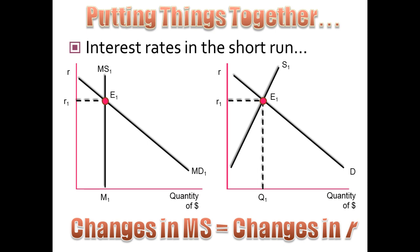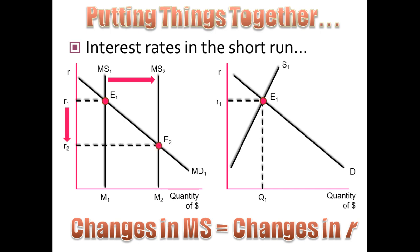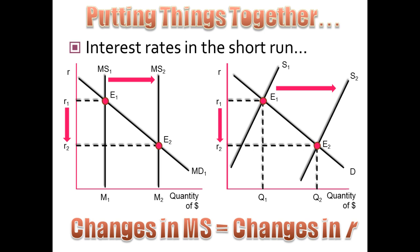These two markets — the money market and the loanable funds market — work together. Changes in money supply affect the interest rate in both markets. In the short run, if we increase the money supply, we see a reduction in the interest rate from R1 down to R2. The increased money supply, because of the money multiplier, creates more M1, meaning more money is in the banks and being saved. So the supply of loanable funds also shifts to the right, moving the interest rate from R1 down to R2 with more loanable funds being lent out.